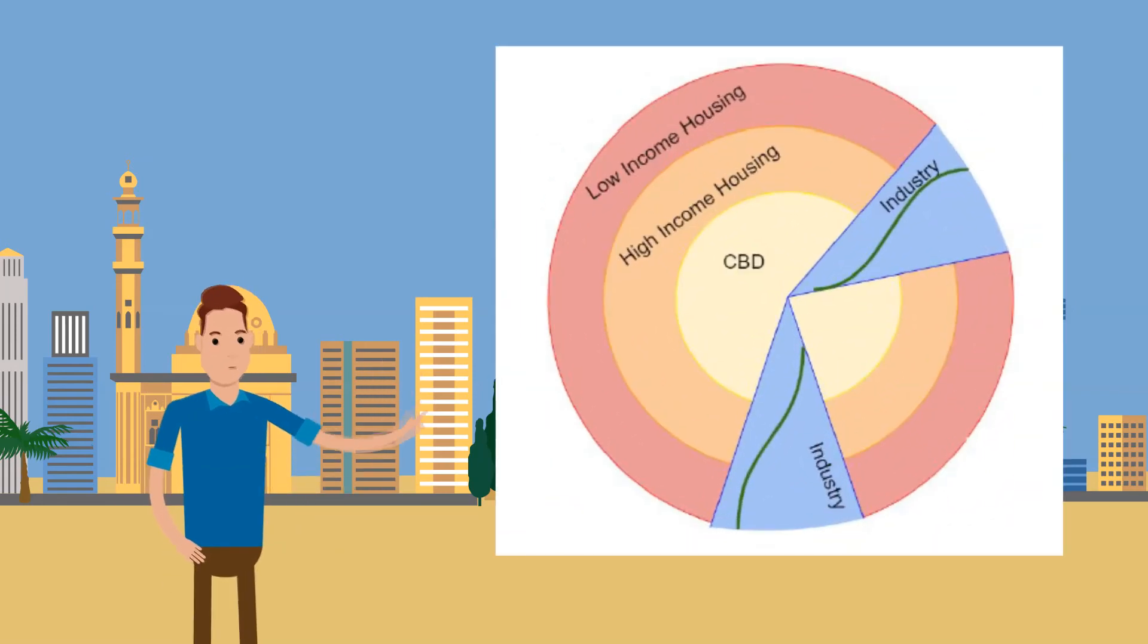Cities look like tree rings with the oldest buildings in the center and the youngest buildings on the outside or periphery. Industry forms small wedges spanning the center of the city to the periphery alongside major transport links, things such as motorways, train lines, and canals for shipping.